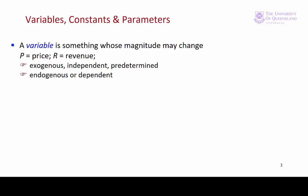Now let's look at the parts of an equation. First there are variables. A variable is something whose magnitude changes. For example, we might have price and revenue. X and y were variables in the equation to the circle; as x changes, y changes.